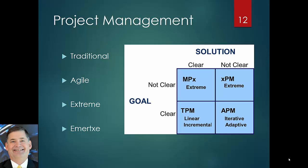Agile is where you've got a clear goal but the solution is not clear — how you reach that goal is not clear. In that case you go through either an iterative or adaptive approach to determine what the solution is that will allow you to reach that goal. When you've got a clear solution but you're not clear what the goal is — and that sounds somewhat odd but it does occur — for example, you develop a drug but you're not quite sure what it will solve, or you develop a technology but you're not sure how it could be used. That's an example of an extreme project.